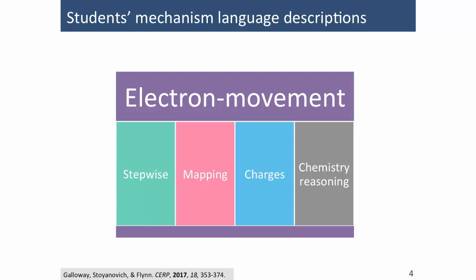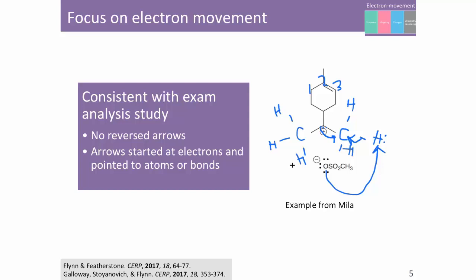How students talked about electron movement throughout the task contributed to how they responded to the questions. Students frequently talked about electron movement as they worked through the task. For example, even though Mila didn't draw the correct arrows, she started the arrows at electron pairs or bonds and pointed them to atoms or bonds, demonstrating her attention to electron movement.